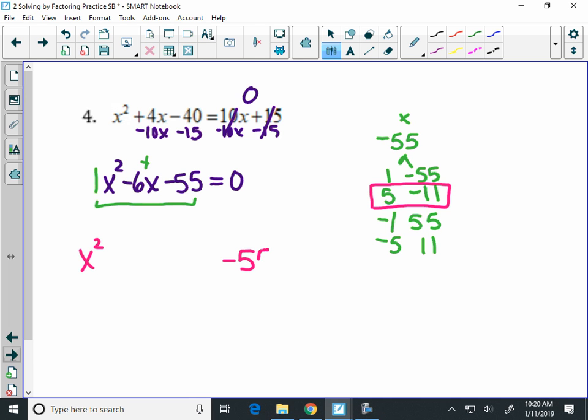And when I split the middle, the first and the last term come down. This middle term here gets split up with the numbers I just showed. Now, since I have 4 terms, I'm going to use the method of grouping to finish factoring. All right, from the first group, I look for a GCF. Both of these have an X in common.